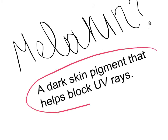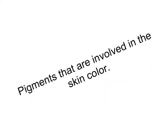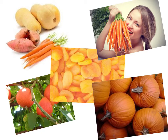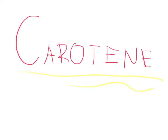Melanin is a dark skin pigment that helps block UV rays. Now let's talk about pigments that are involved in skin color. The first pigment is carotene. Carotene is the least common skin pigment. Results of this pigment can be yellowing of skin, which can be caused by overconsumption of carotene-containing foods. So carotene results in abnormal skin coloration.